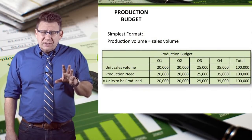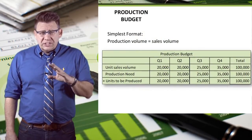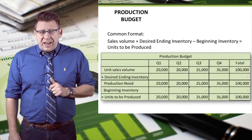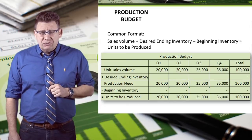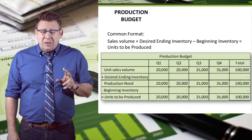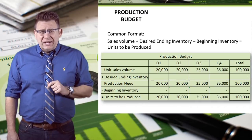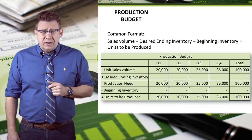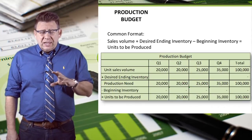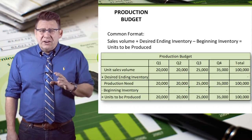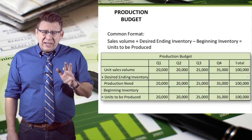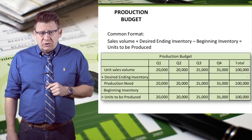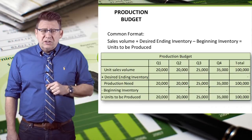In the simplest format, units to be produced would just equal our sales volume. But a more common format would be to factor beginning and ending inventory into the calculations. Companies don't want to end the month with zero items in inventory because they wouldn't have anything to sell on the first day of the next month. So the production budget is sales volume plus desired ending inventory — that equals the production needs. From that we subtract the beginning inventory to arrive at the units needed to be produced.